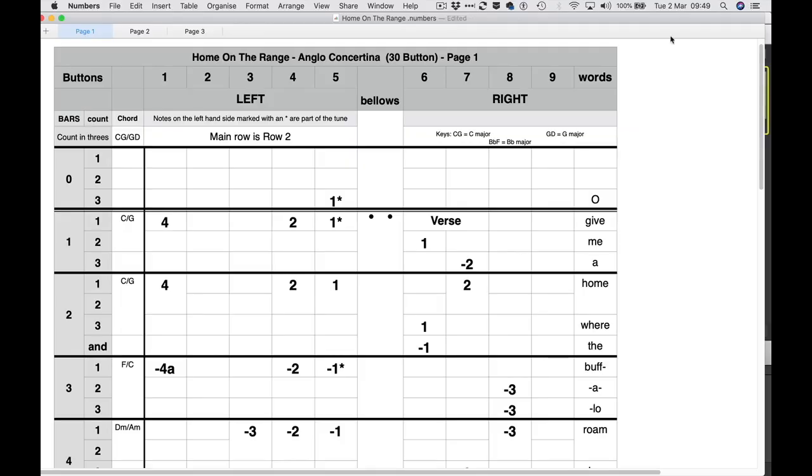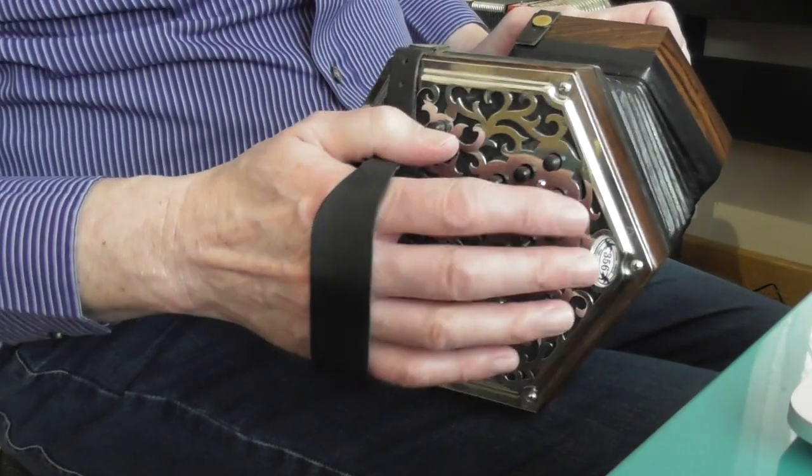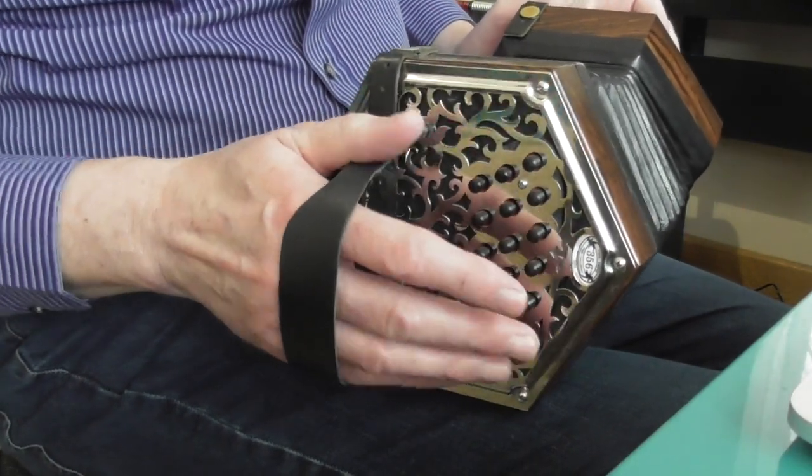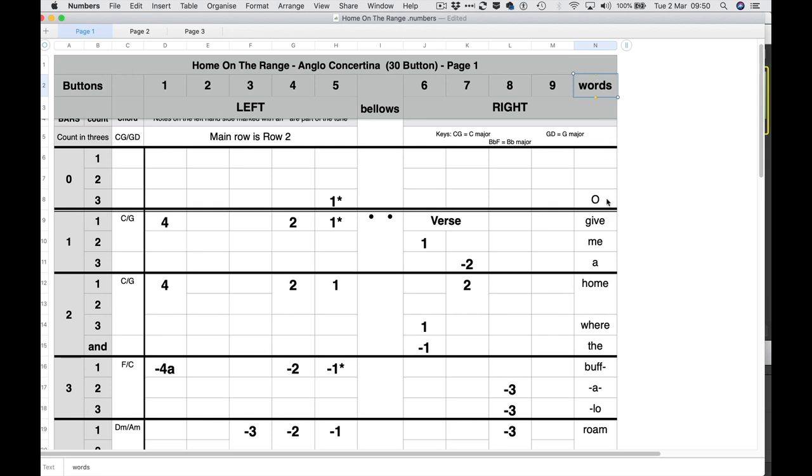It's an ill wind as they say because I've added a couple of new features to the tablature since then. One of those is putting in words which you can see on the right hand side here. Because I don't use button 10, which is the lowest button on all three rows on the right hand side, I'm using that column to put words in. It helps you find your way around if you've got the words there.